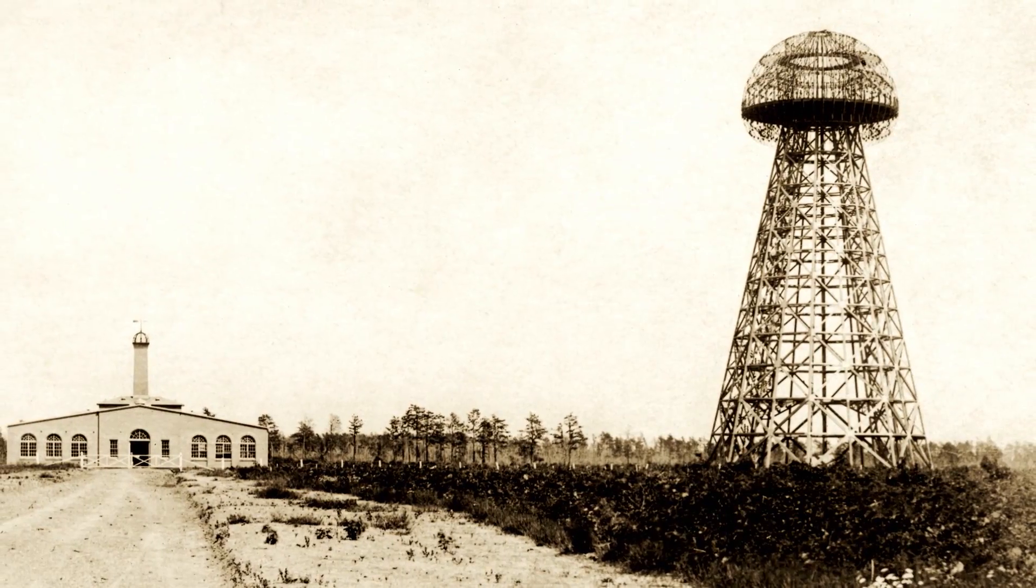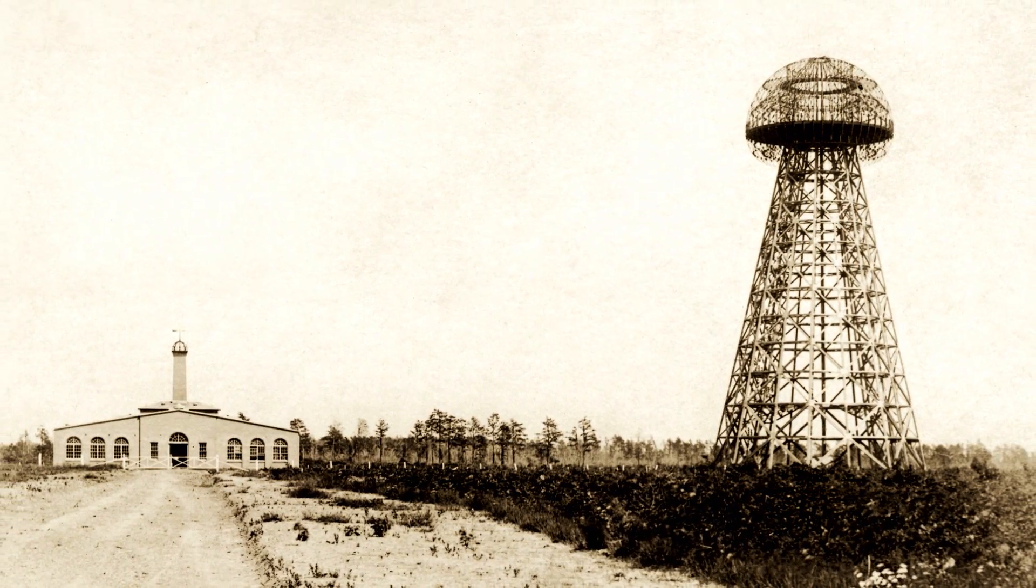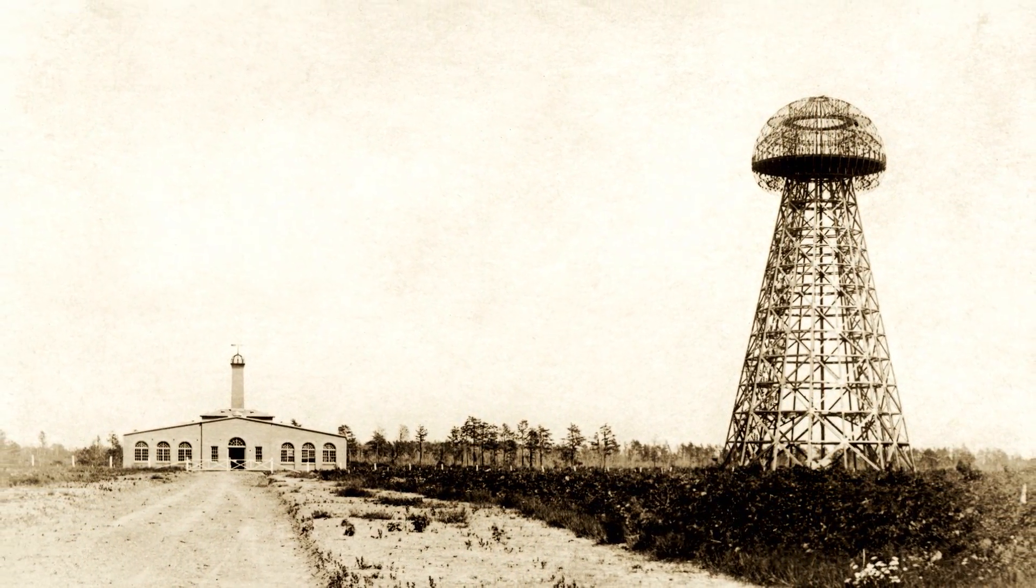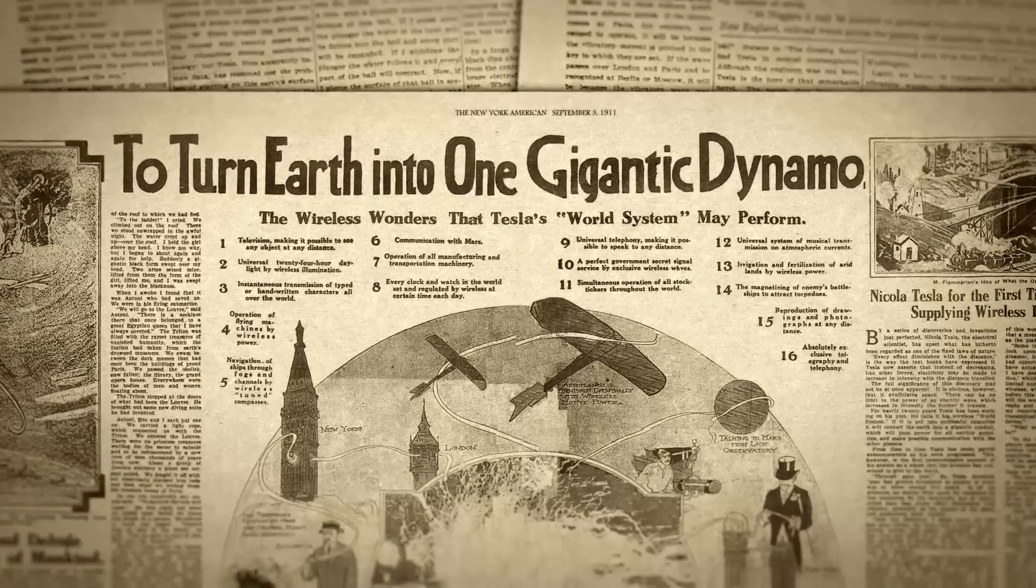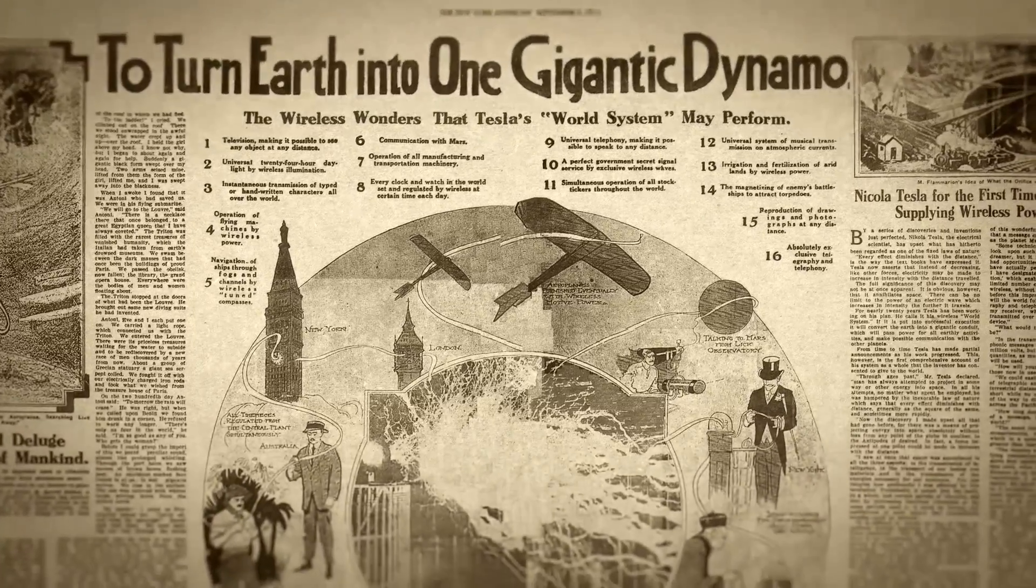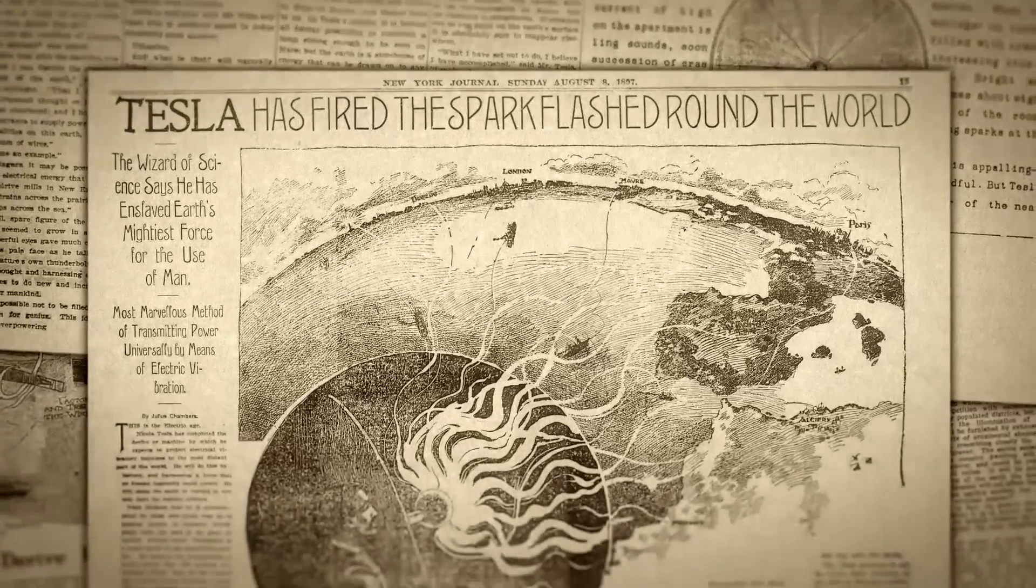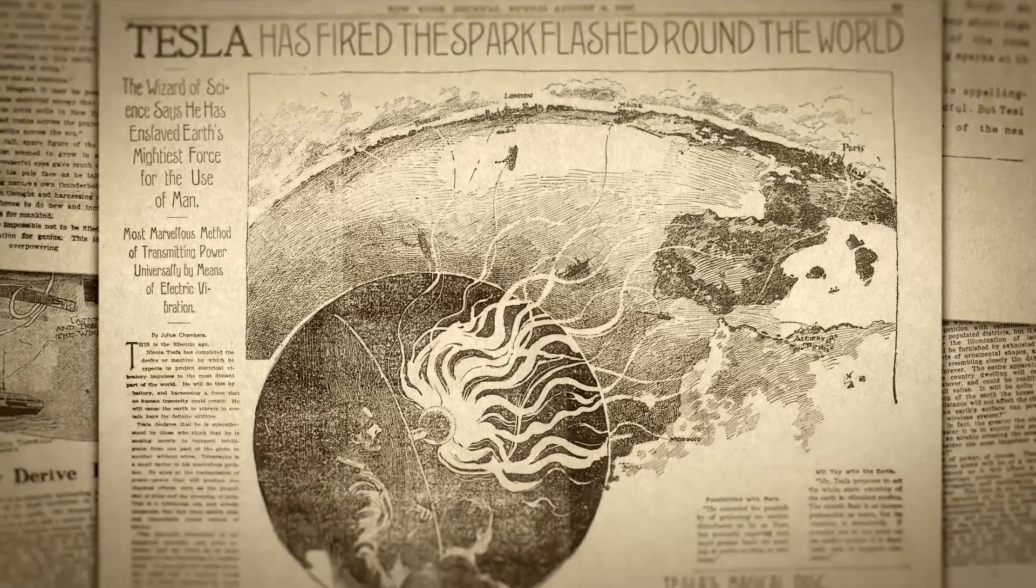His tower would have loomed over the landscape for miles. It was 187 feet high. The purpose of the tower essentially was to be able to tap into the energy that Tesla believed was in the earth that he thought he would be able to transmit to people around the world as wireless electricity.